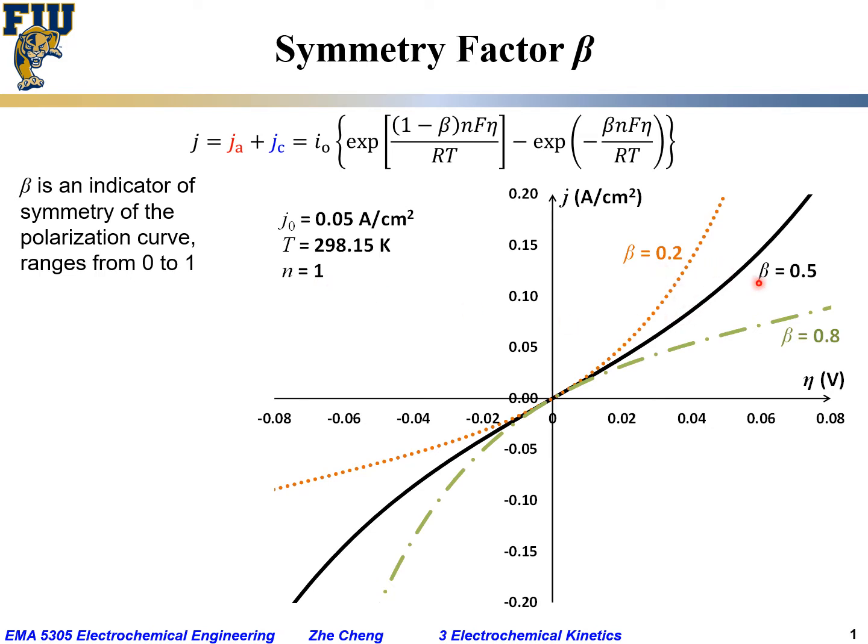But then we plug different beta values in there. The black solid curve is for the situation when symmetry factor is 0.5, and you can see it's symmetric.